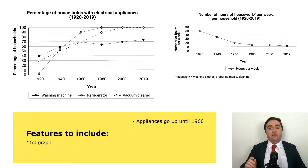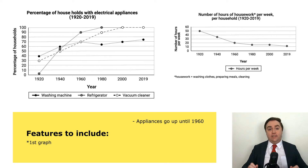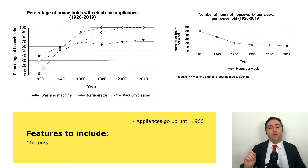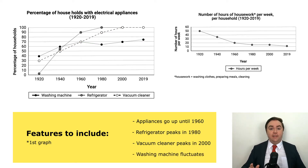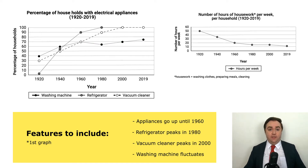We analyze in the first graph that all three electrical appliances go up until 1960. That makes 1960 an important date, so we can take note of that feature to be included. After this point, refrigerator continues to rise until it peaks at 100% in 1980, and vacuum cleaner rises to a peak at 100% in 2000.